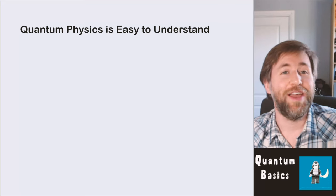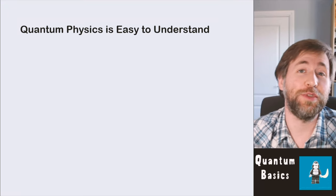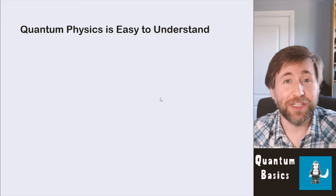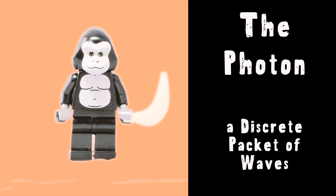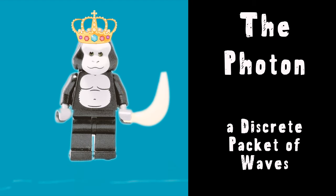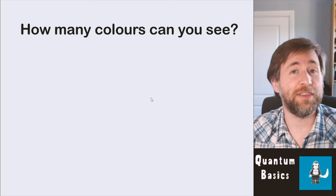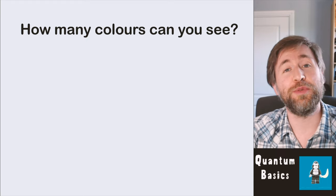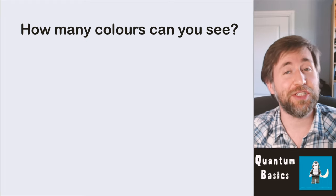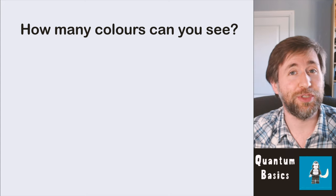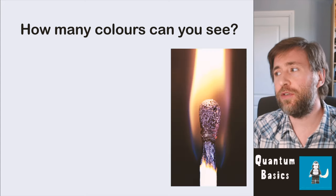I'm going to teach you how to describe quantum behaviours and how to make the calculations. In fact, quantum physics is really easy to understand, at least at A-level. Let's establish a few things: quantum is about discrete energies and it's about the emission and absorption of light from atoms.